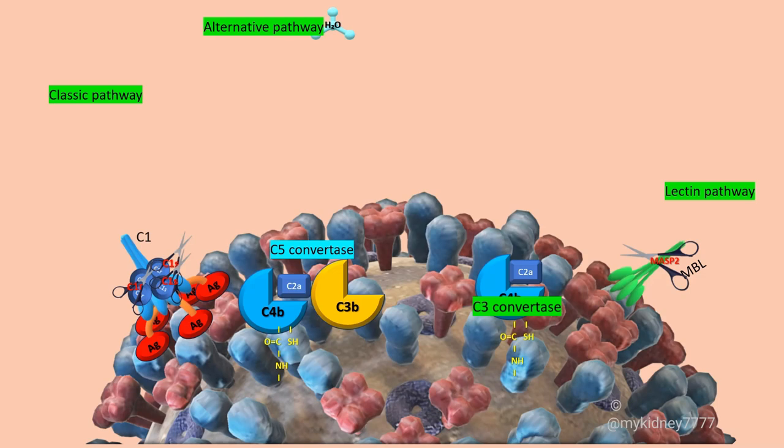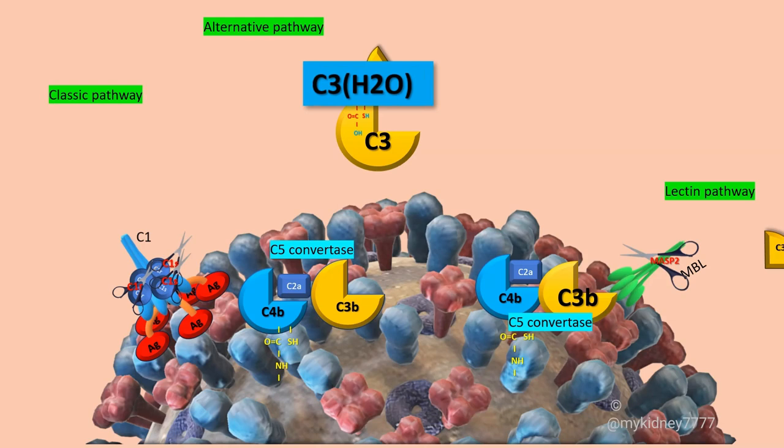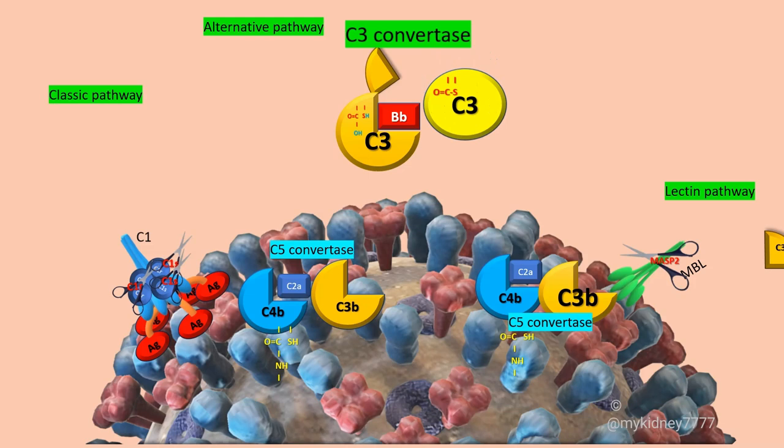In the alternative pathway, the hydrolysis of the internal thioester bond makes a conformational change on C3, which exposes the binding site for B-factor. The B-factor bounded by C3H2O is cleaved by D-factor, generating the fluid phase convertase, C3H2OBB, which cleaves C3 in C3B and C3A, which is an anaphylatoxin.